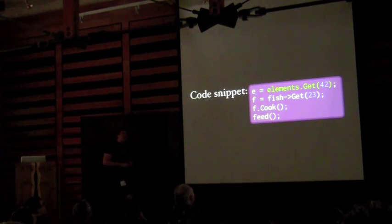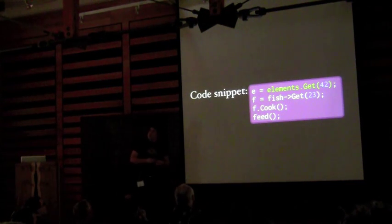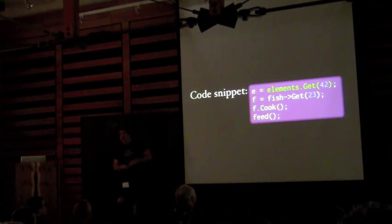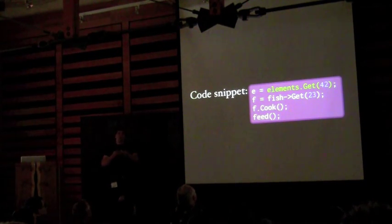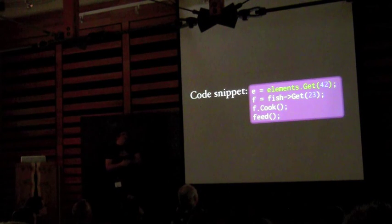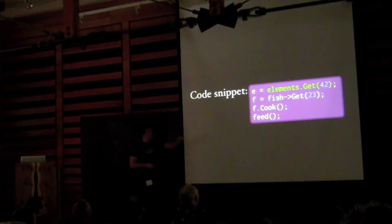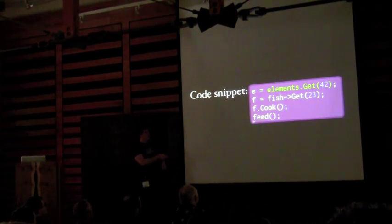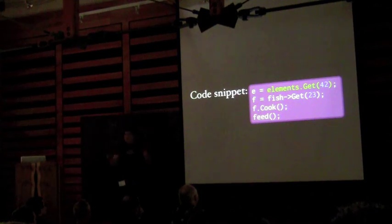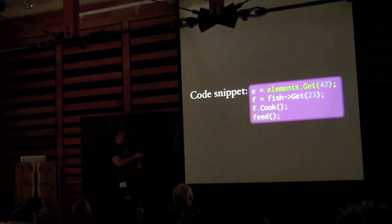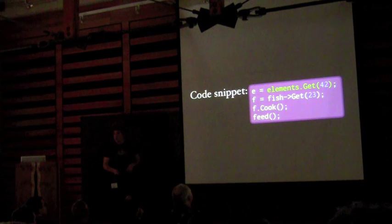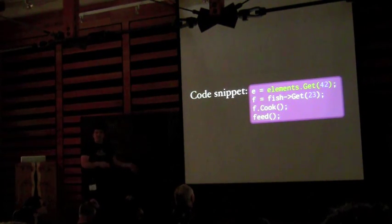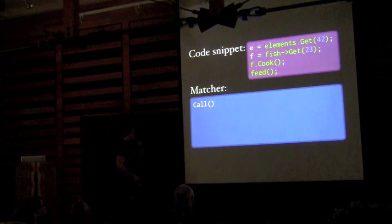To explain how this predicate library works, I'll walk through a simplified example. The code snippet has four statements: some assignment, a method call, a different method call, and another assignment. We're looking for the `get` call on one of the element containers. The first step is to build the most primitive matcher: look for calls. But when we look for calls, we find a lot of things we didn't want — everything highlighted would be matched.